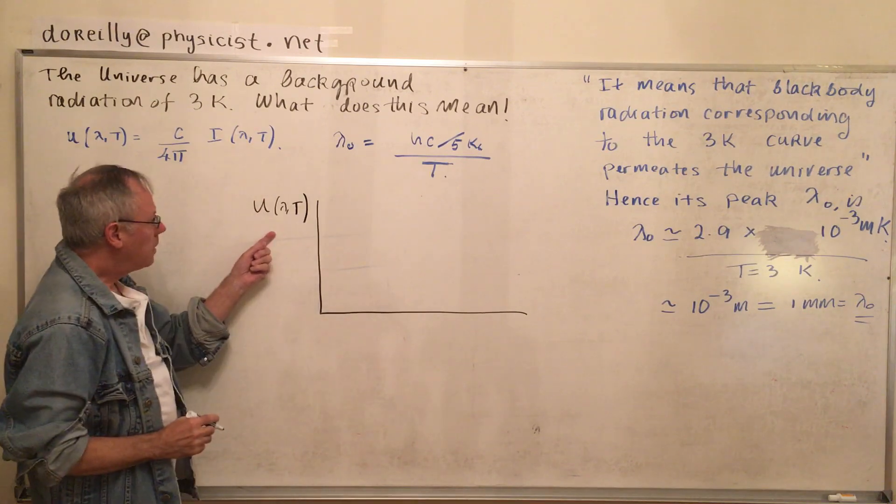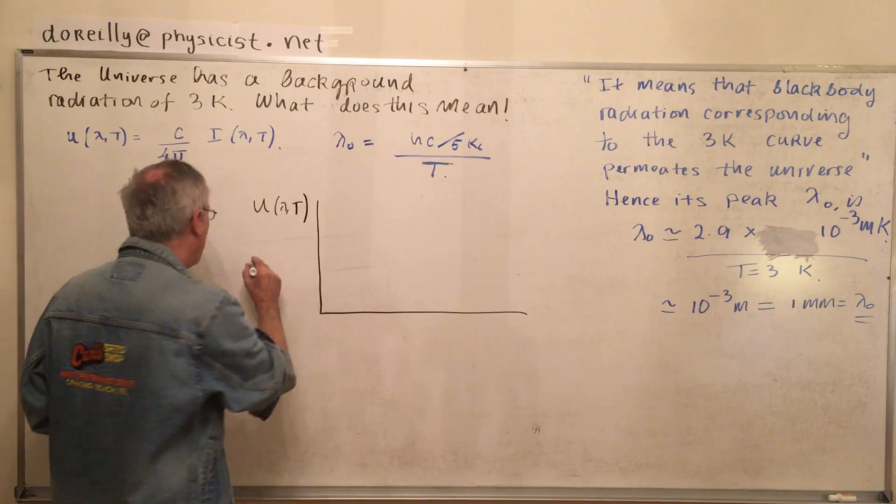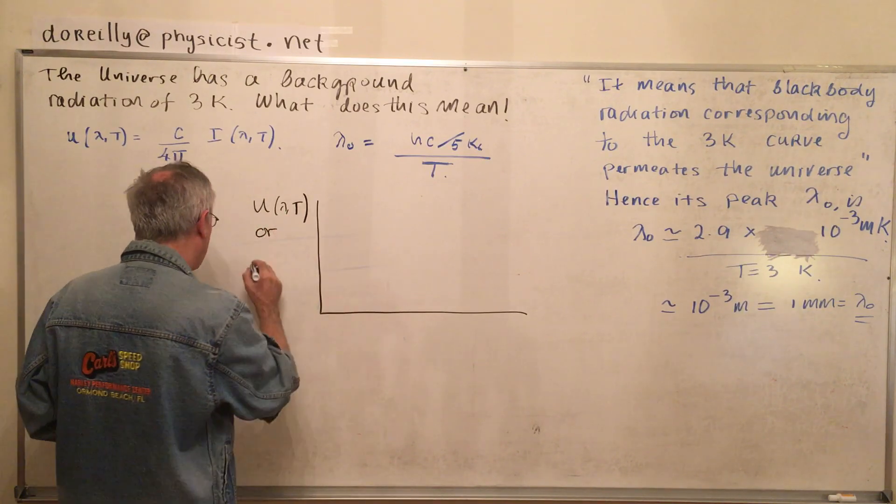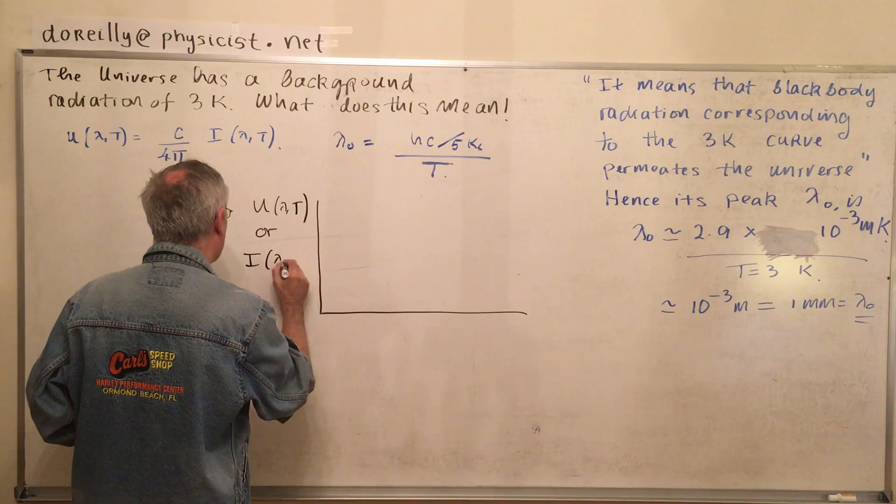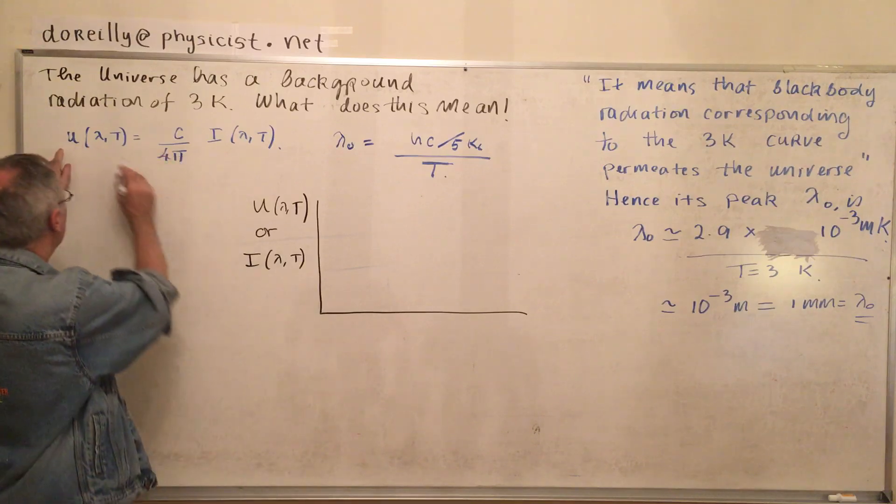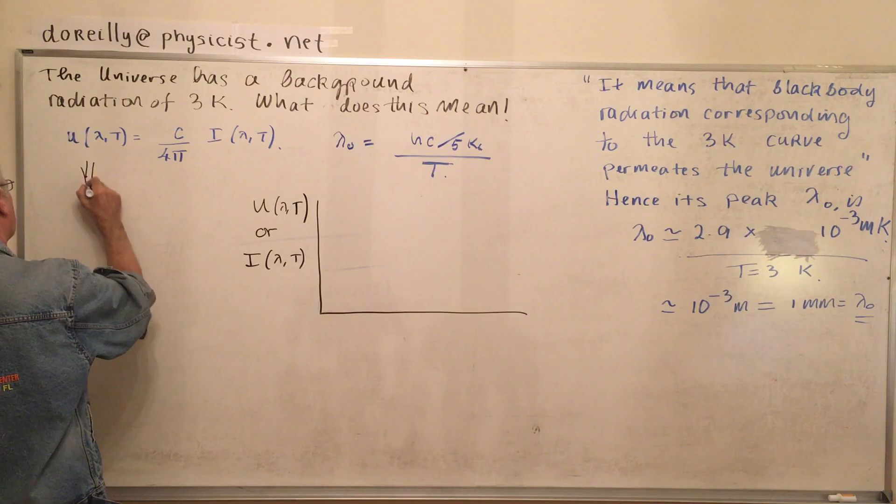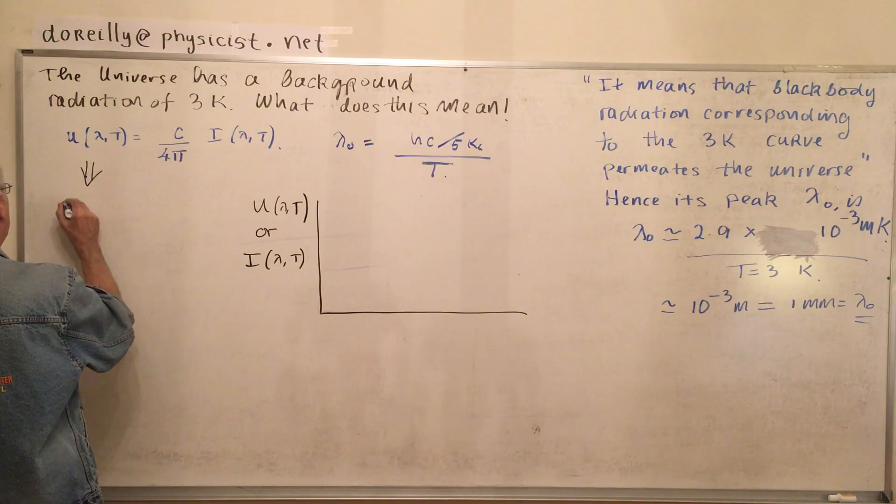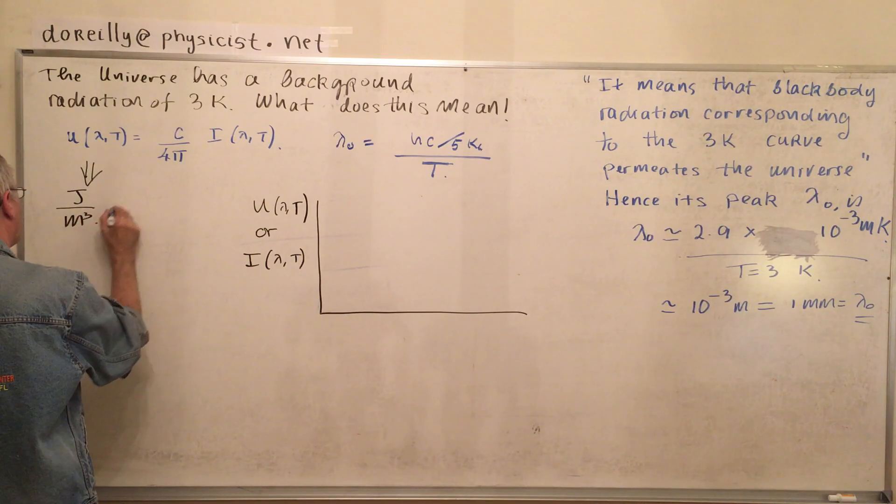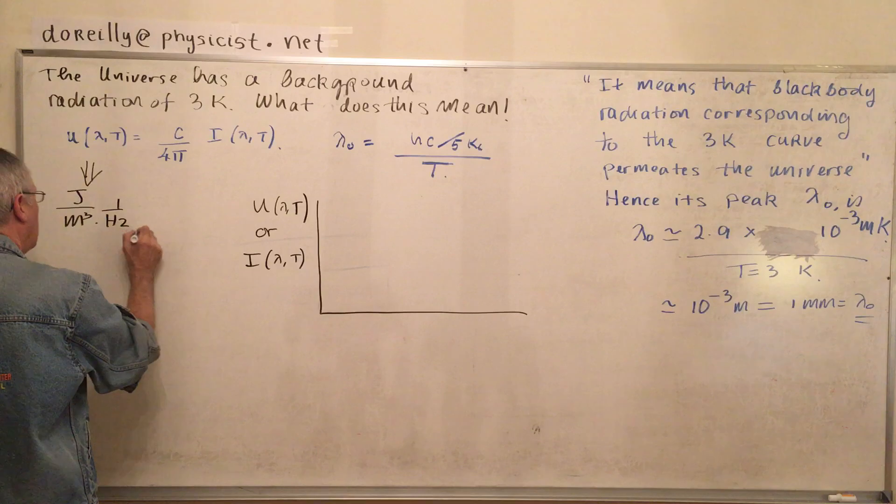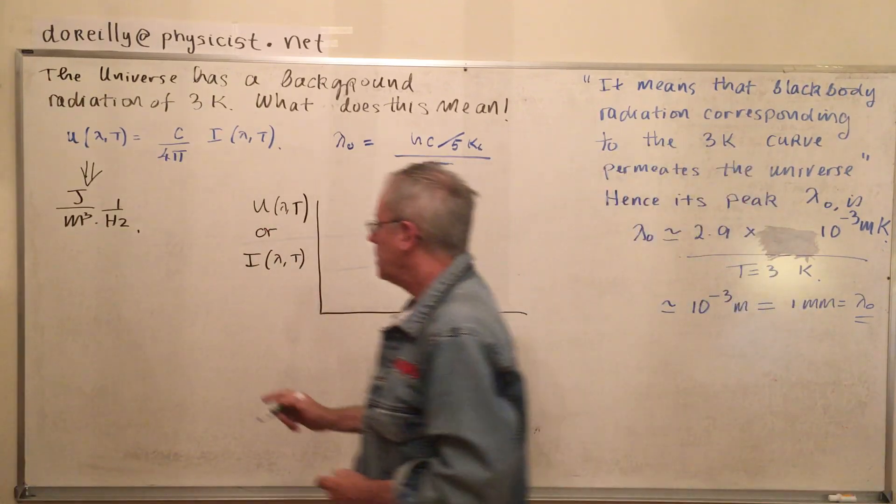If we plot the energy density, the spectral energy density, that is, with the lambda dependence, or we could plot in a slightly different curve. I lambda t and U lambda t are related. U lambda t is the energy density. Well, it's the spectral energy density. Joules per cubic meter per hertz.